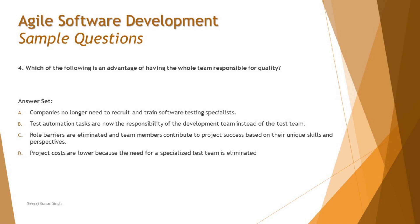So here we are asking: what is the advantage of having the whole team responsible for quality? We have four options. There are two things to do in these questions: first, think about what the question is asking and establish possible answers in your mind without looking at the options, because reading options first can divert you from the exact answer.